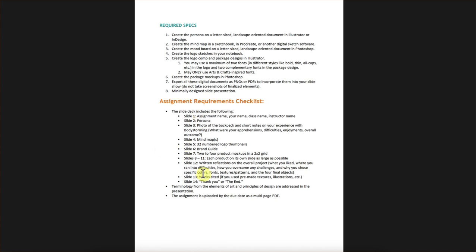For the requirements checklist: the first slide will have your assignment name, your name, my name, and the class name. Assignment two will show your persona. Assignment three will show a photo of the backpack exercise and short notes on your body storming exercise. The fourth slide will show your mind map, the fifth your thumbnails, sixth your brand guide, seventh two to four product mock-ups in a grid. The next group of slides will have each product on its own slide as large as possible, followed by written reflections on your overall project, any works cited, and a thank you slide.